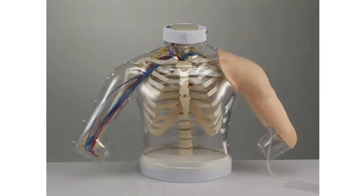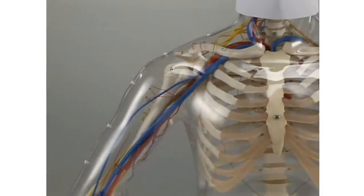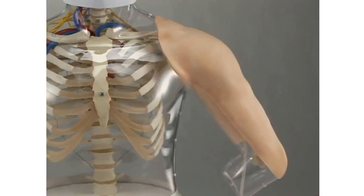This model is made of two parts. The transparent part is structured by the acromion, vein, artery, and others for visual practice. The dermal surface part is for actual injection practice.